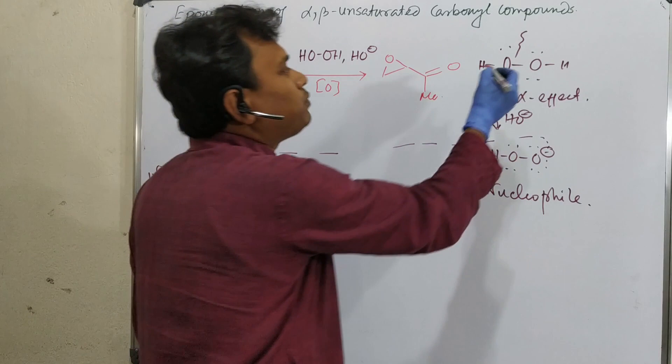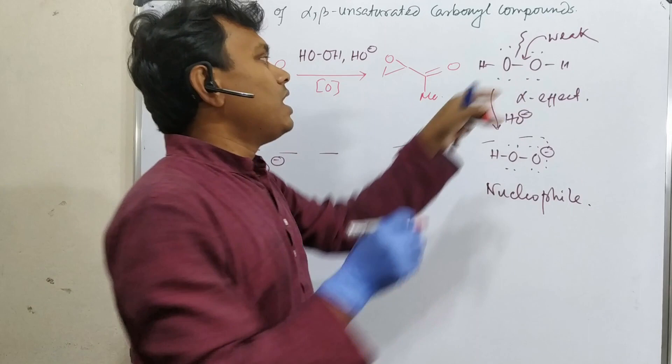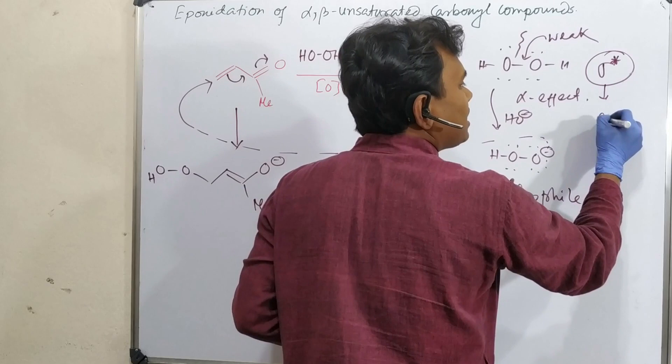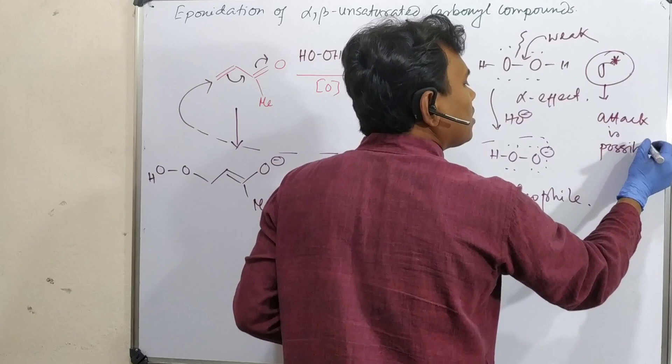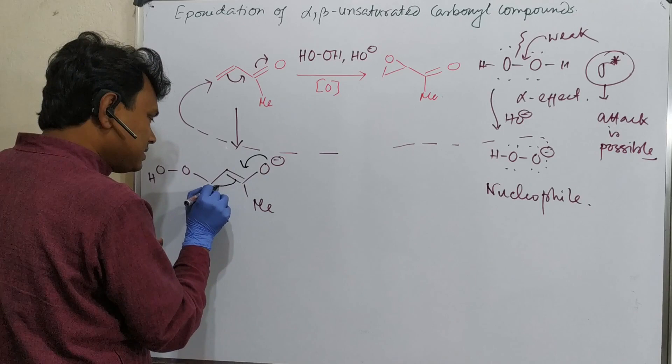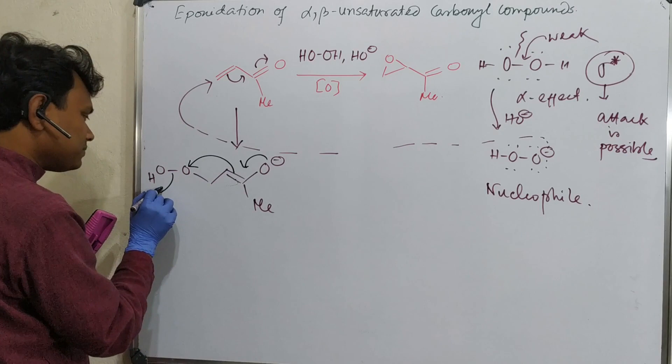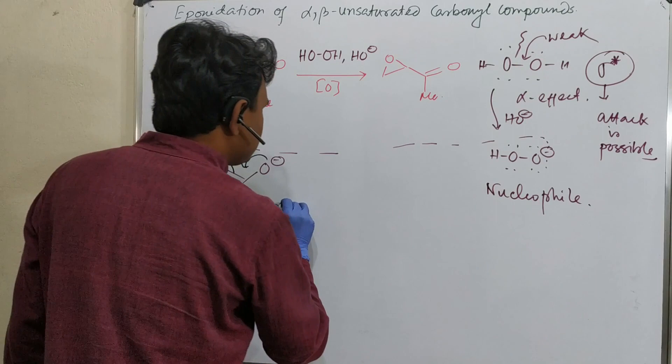Consequence is this is O minus in hybrid OH. Now always keep in mind that this bond is weak - this oxygen-oxygen bond is weak. Higher in energy, not stable. So that's why attack on this bond is possible - means attack on the sigma star of this bond is possible.